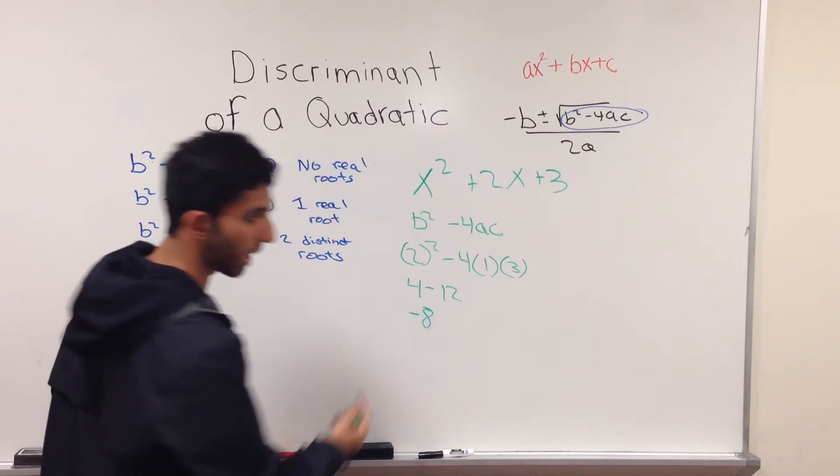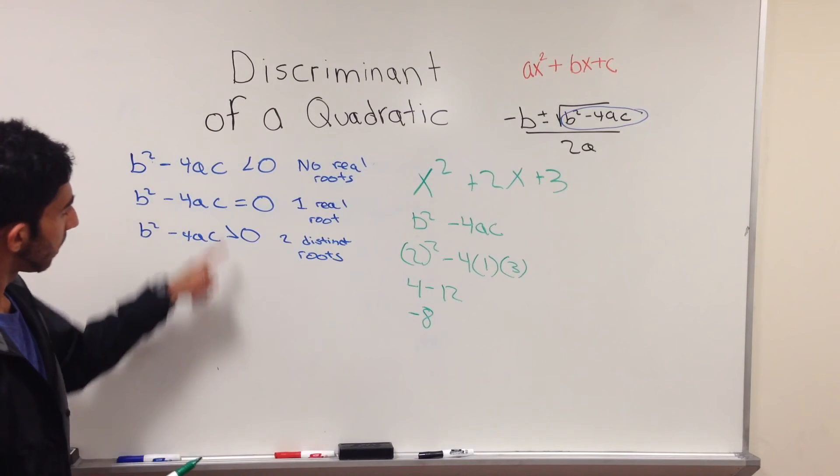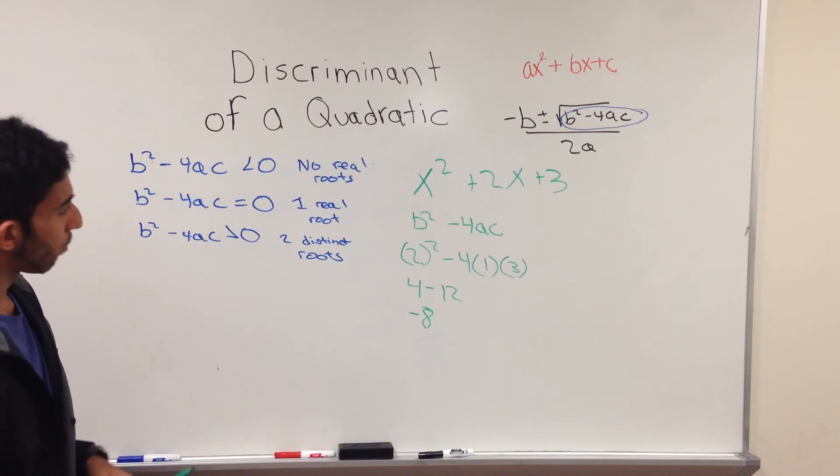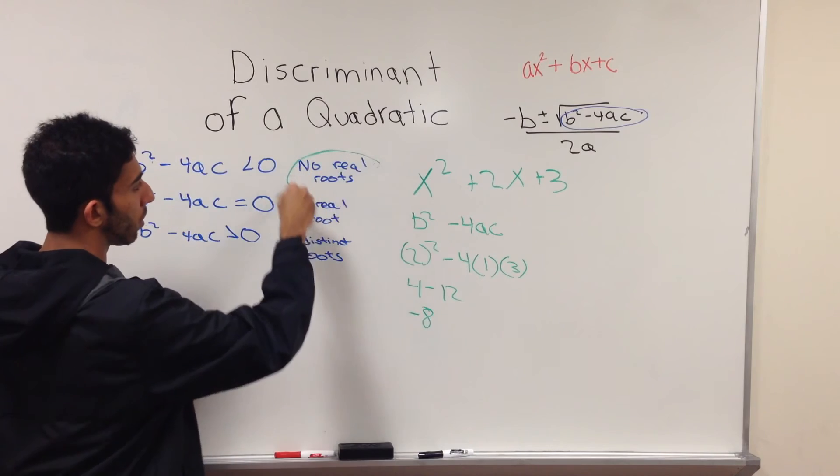Your discriminant is a negative number, hence it is less than zero, which means it has no real roots.